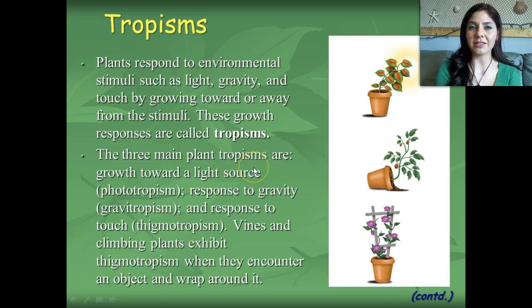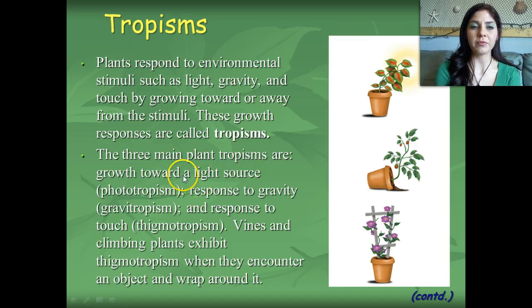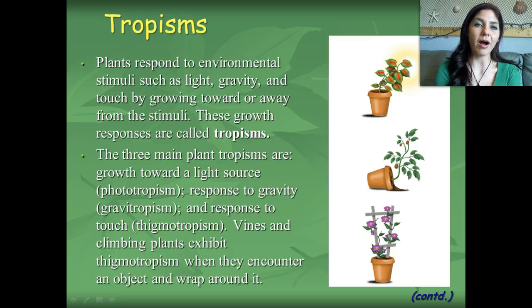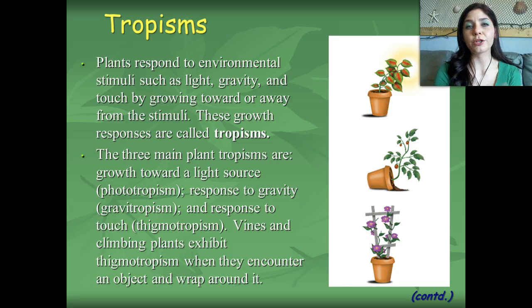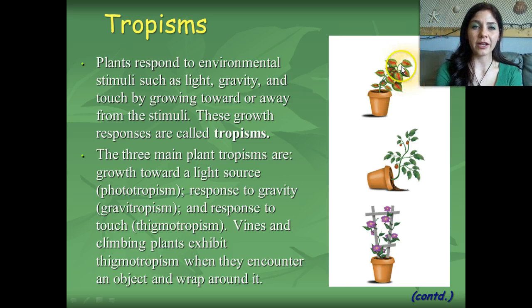There are three main types of plant tropisms. The first is phototropism, which is the growth of a plant towards light. We call that a positive tropism because it's growing towards the source. You can see the plant growing towards the sunlight.